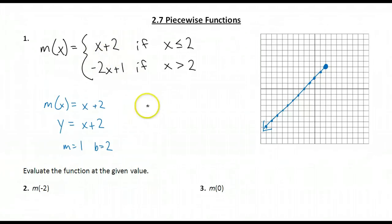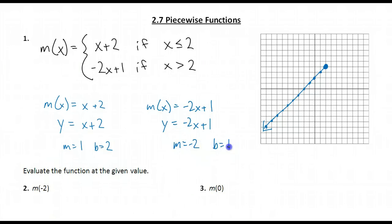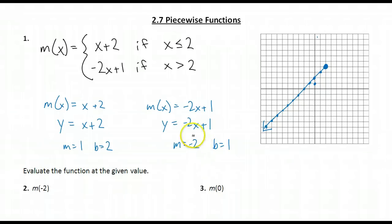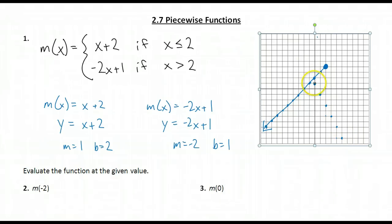The second piece is when m of x equals negative 2x plus 1. m of x takes the place of y, so I have the line written in slope-intercept form: y equals negative 2x plus 1. The slope of this line is negative 2 and the y-intercept is 1. So I'm going to graph this line — I go up 1 on the y-axis as my starting point, and I have a slope of negative 2, which is down 2 to the right 1. Down is negative, to the right is positive, so negative over positive gives a negative slope. I can also go up and to the left — up is positive, to the left is negative — and a positive divided by a negative still gives a negative slope.